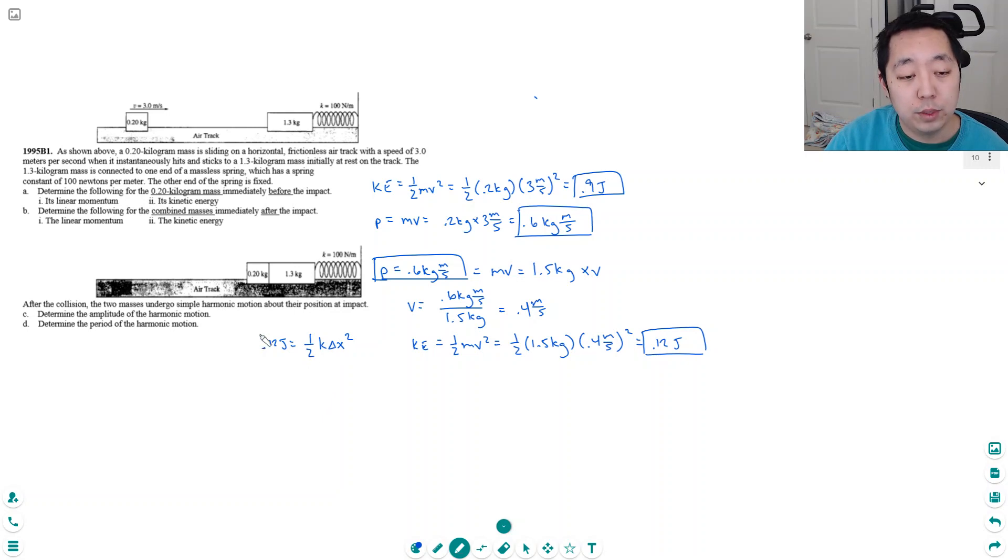So I can multiply by 2 divide by k so delta x, which would be the amplitude of the harmonic motion, is square root of 2 times 0.12 joules and k the spring constant they told us was 100 newtons per meter. So compute that square root of 2 times 0.12 divided by 100. I got 0.0490 meters which is if you want to do in centimeters would be 4.9 centimeters.